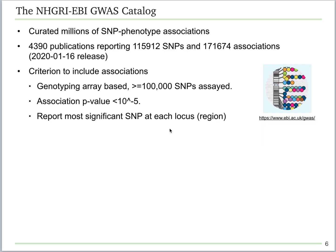Nowadays, there have been thousands of GWAS studies published, and it's impossible to read the studies one by one in order to dig out the important SNPs of interest. Fortunately, the NHGRI-EBI GWAS catalog has a curated database containing millions of SNP-phenotype associations. There are certain criteria for the GWAS catalog to include published associations — for example, a study has to be genotyping with more than 100K SNPs at the same time, and the reported SNPs must reach a p-value less than 10 to the minus 5 to be included. Moreover, it only includes the most significant SNPs at each locus.